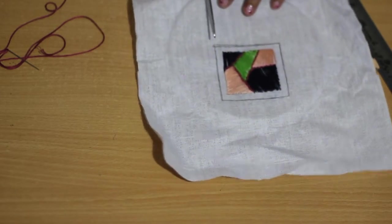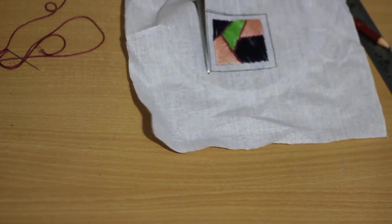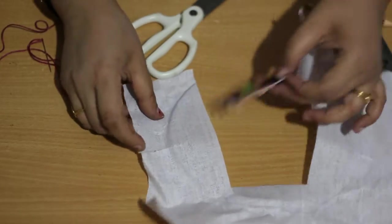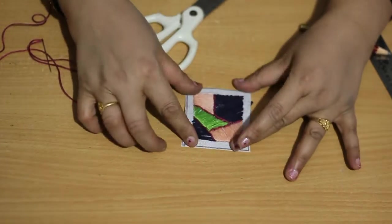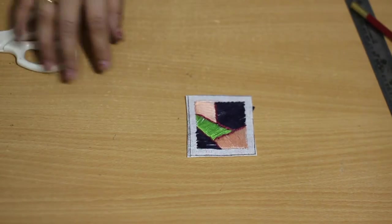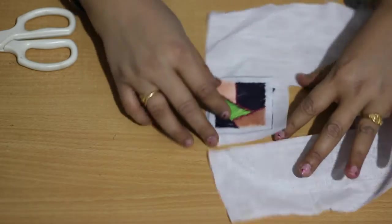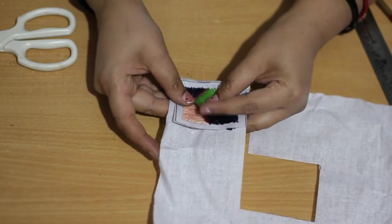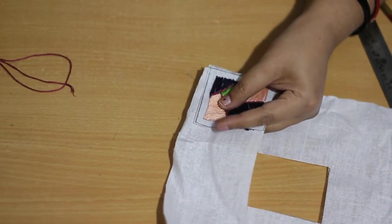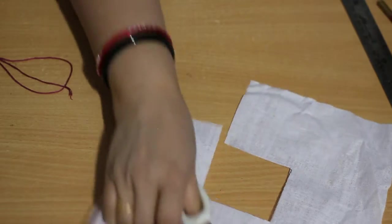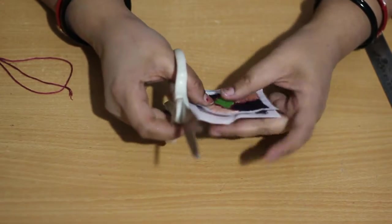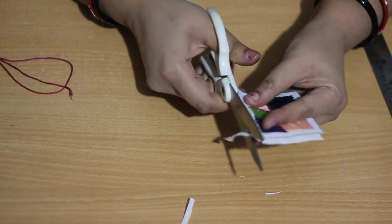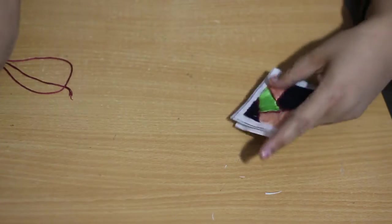We have to give a little bit extra space. Draw one more square around it. That space we are going to use as border. We will fill that gap also with buttonhole stitch. One more piece of cloth we have to cut to attach at the back of the pendant to hide the wrong side.